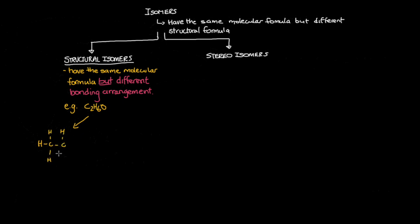Half the class draw the following structure, while the other half draw the one on the right. The one on the left is called ethanol, while the one on the right is called dimethyl ether. These are termed isomers of each other as they possess the same molecular formula but different structural formula. Both are correct representations for the molecular formula C2H6O and are known more specifically as structural isomers.